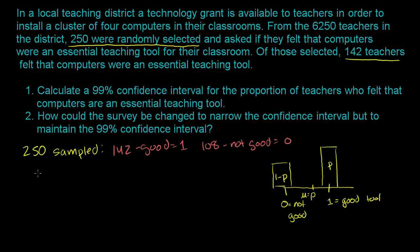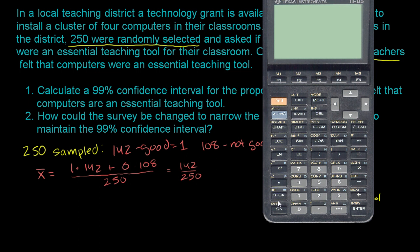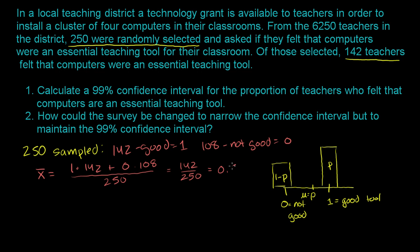What is our sample mean? We have 1 times 142 plus 0 times 108, divided by our total number of samples, 250. It is equal to 142 over 250. You could view this as the sample proportion of teachers who thought that the computers were a good teaching tool. Using a calculator: 142 divided by 250 equals 0.568. So our sample proportion is 0.568, or 56.8%.